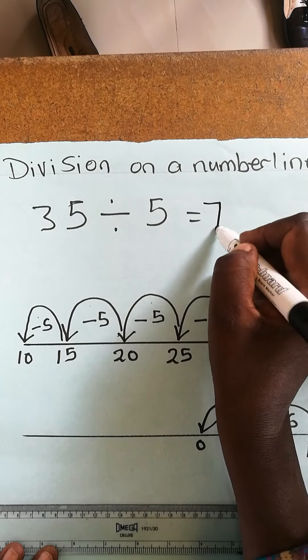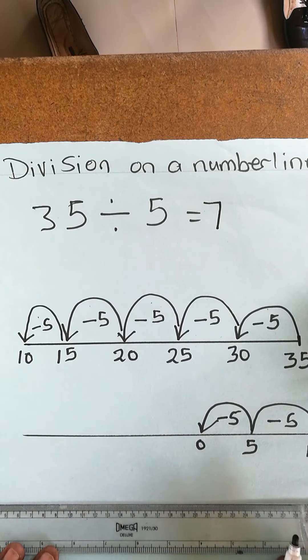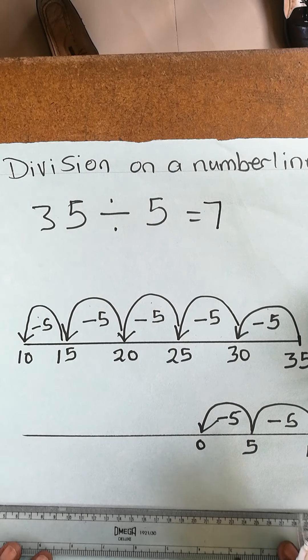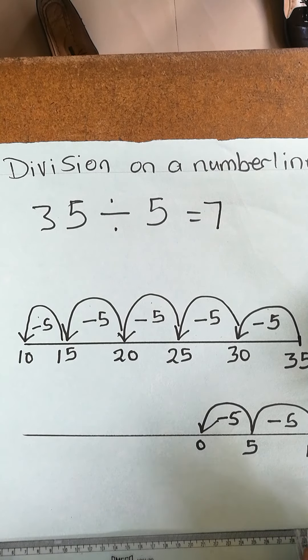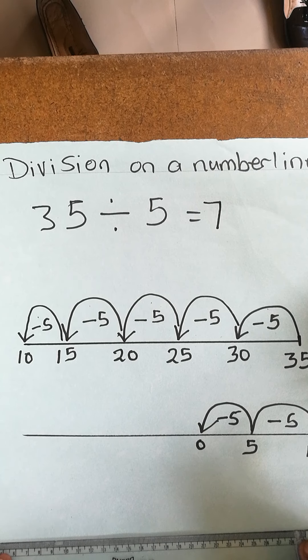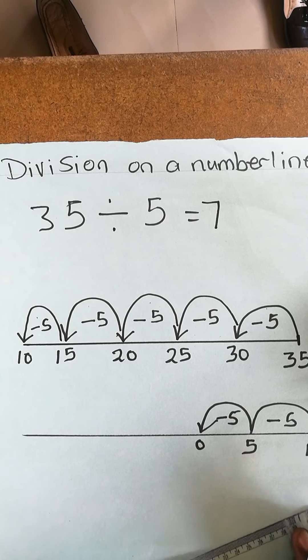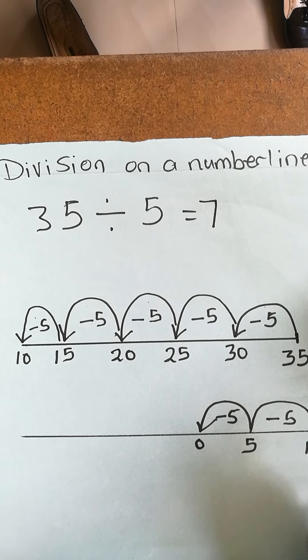Here is 7. 35 divided by 5 is equal to 7. Thank you so much, and you can practice your worksheet for division on the number line without any problem. Thank you so much.